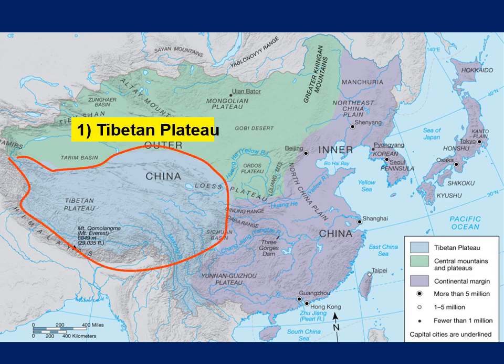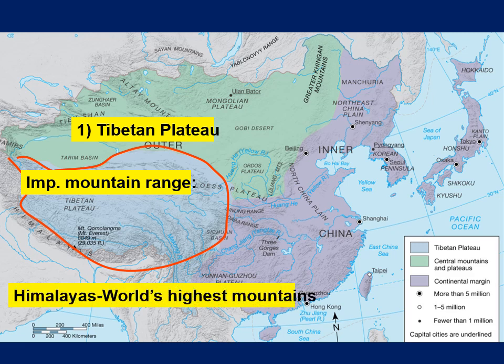In the Tibetan Plateau — shown in blue on the map in your textbook — the important mountain range is the Himalayan Mountains, which are the world's highest mountains. That is where we find Mount Everest. Our second highest mountain is K2, which is found in the Karakoram Mountains.